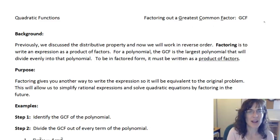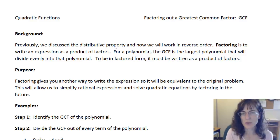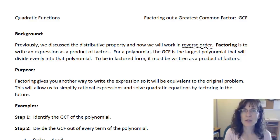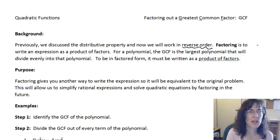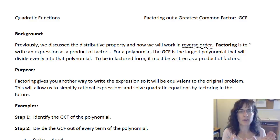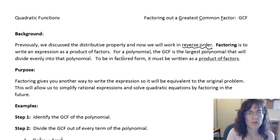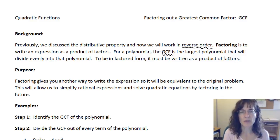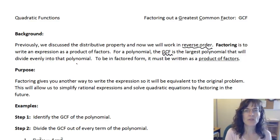Factoring out the greatest common factor. We discussed the distributive property and how we can use the reverse distributive property to help us factor. Factoring allows us to write an expression as a product of some factors. For a polynomial, the greatest common factor is the largest polynomial that will evenly divide into that polynomial — meaning we are not left with any fractions; everything divides out to whole numbers.